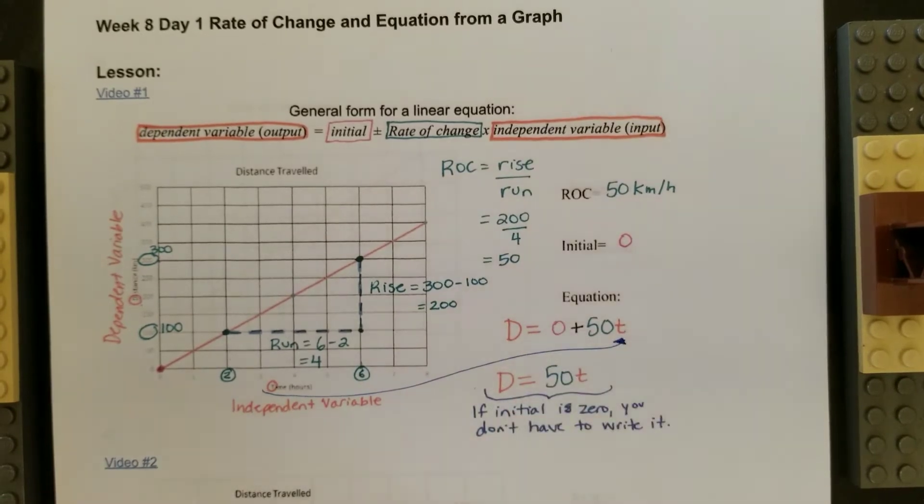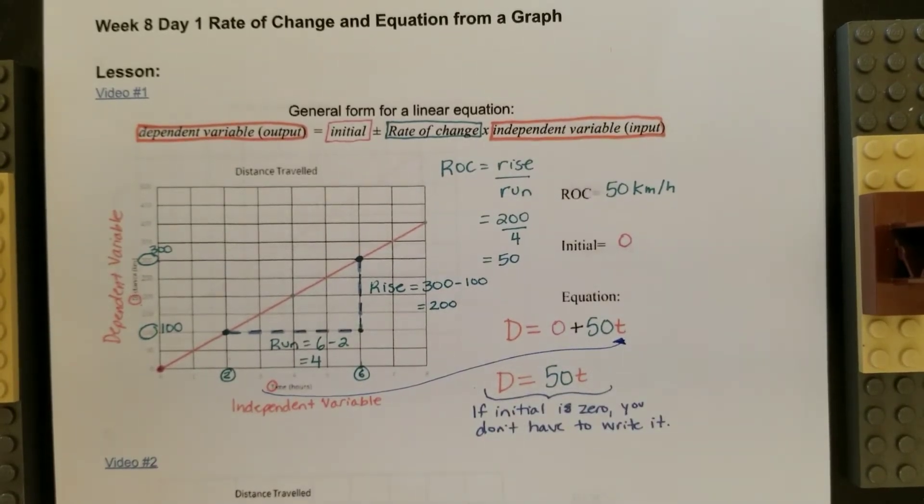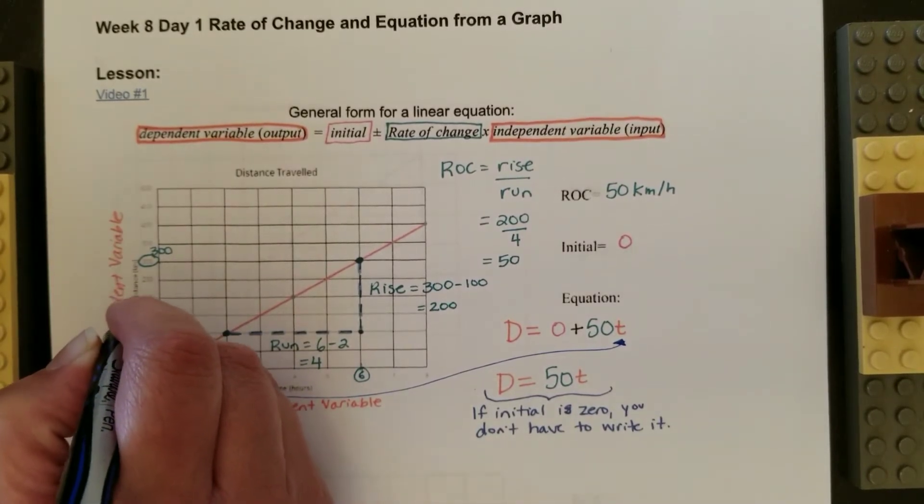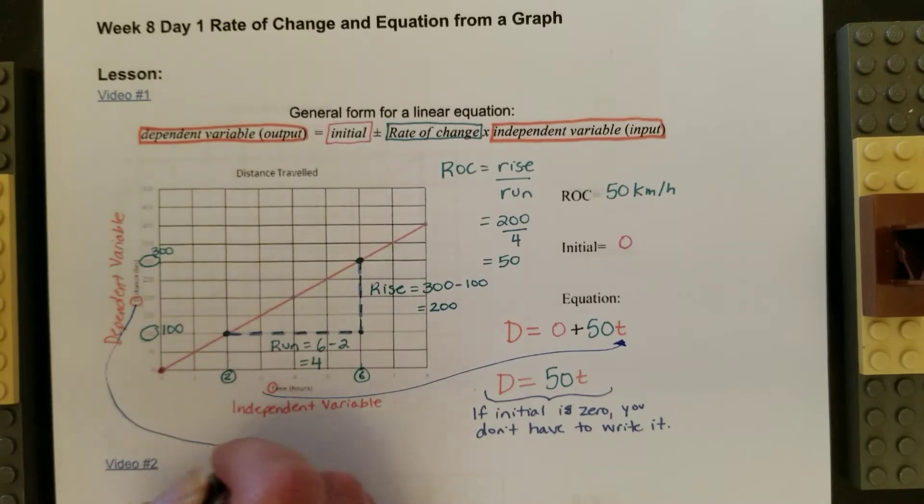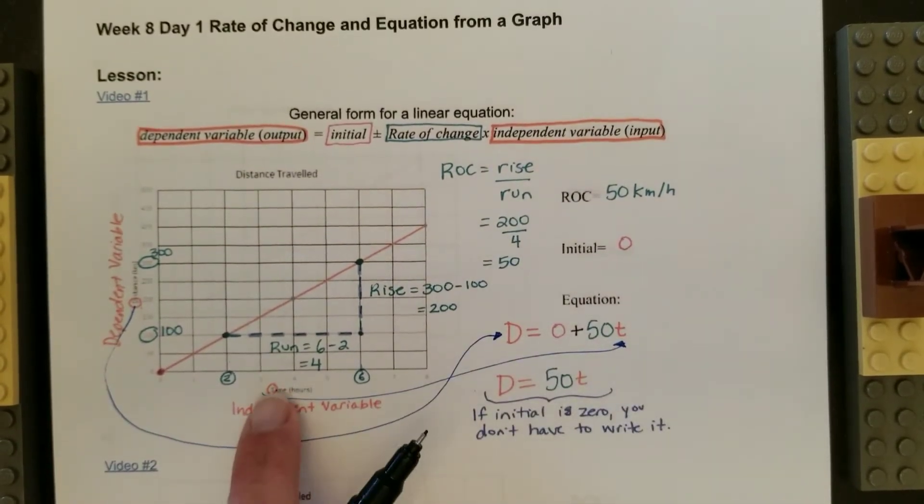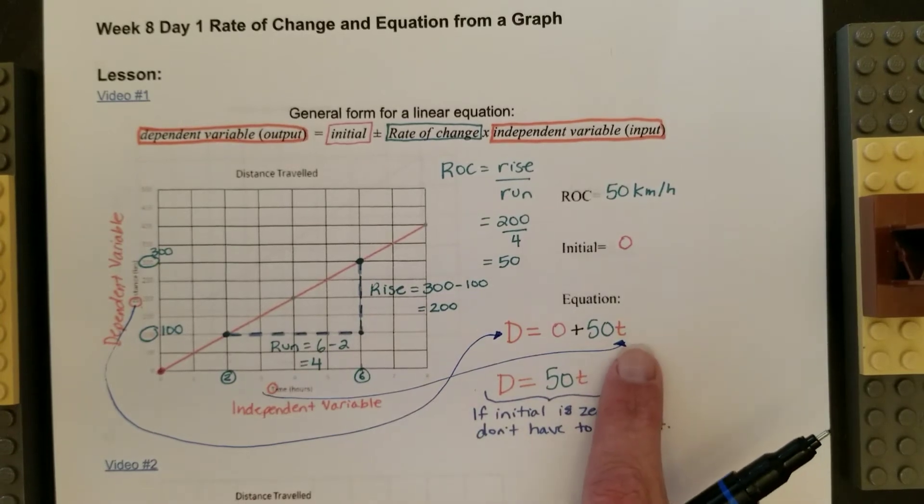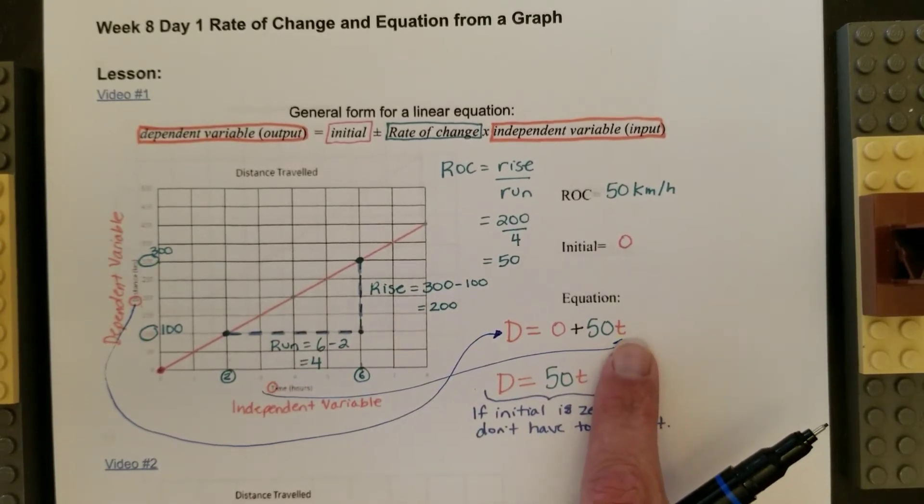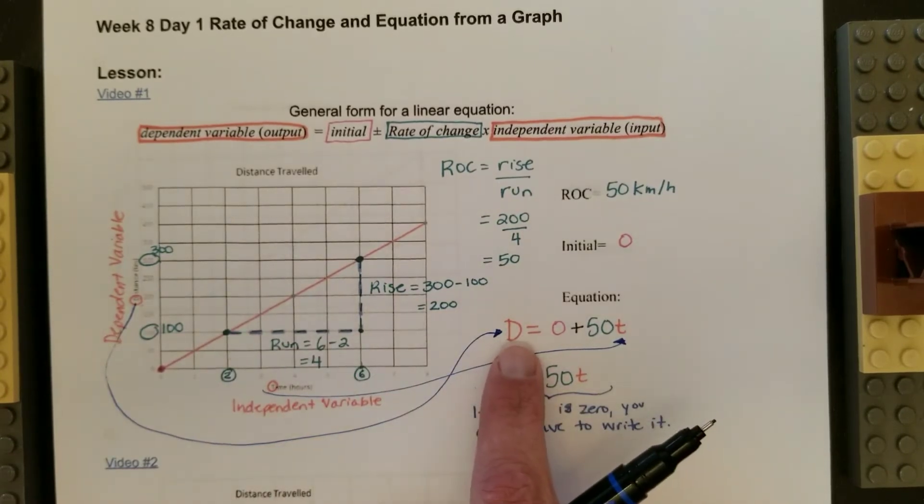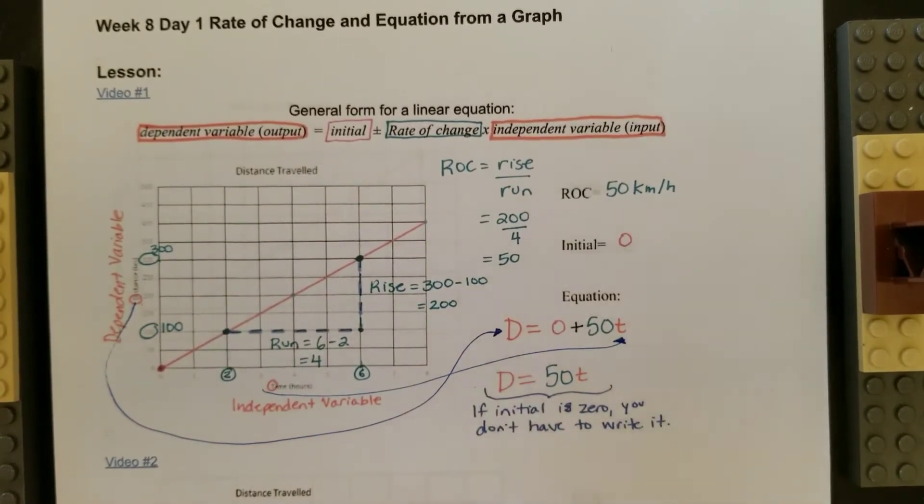And then our dependent variable, which here was the distance, is the first thing there. So your independent variable is always at the end, so that's my t for time, and the dependent variable is always on the left hand side of the equal sign.